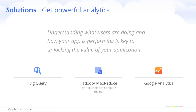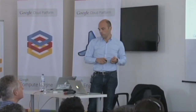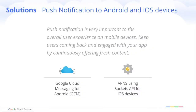Another trend for mobile apps is providing personalized applications. We offer User APIs which enable you to authenticate your users in order to give them personalized content. You can also use Cloud Endpoints to deliver services, and Google accounts can be linked with User APIs. You can use Google Play to deliver and monetize your applications. Push notifications are very important to deliver new information and services, and with Cloud Platform you can do it for both Android and iOS applications.